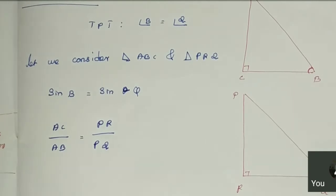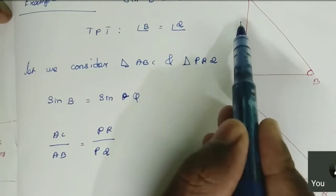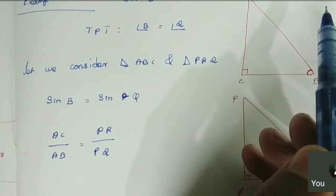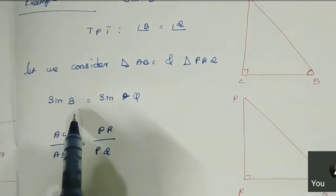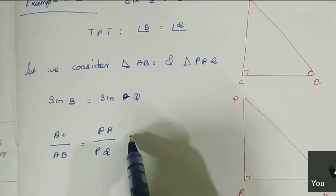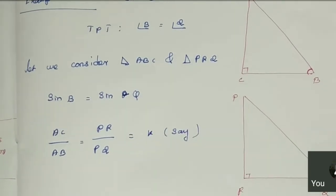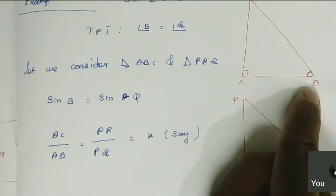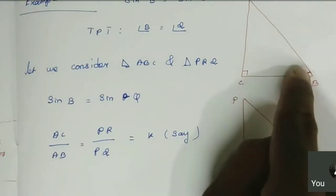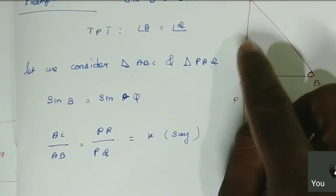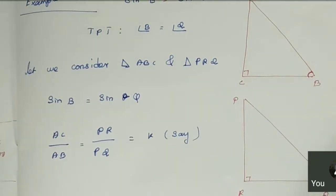So the ratio AC/AB equals PR/PQ. For example, if AC is 10 and AB is 15, then 10 by 15 gives a constant. The same constant results from dividing PR by PQ. This constant we call K.